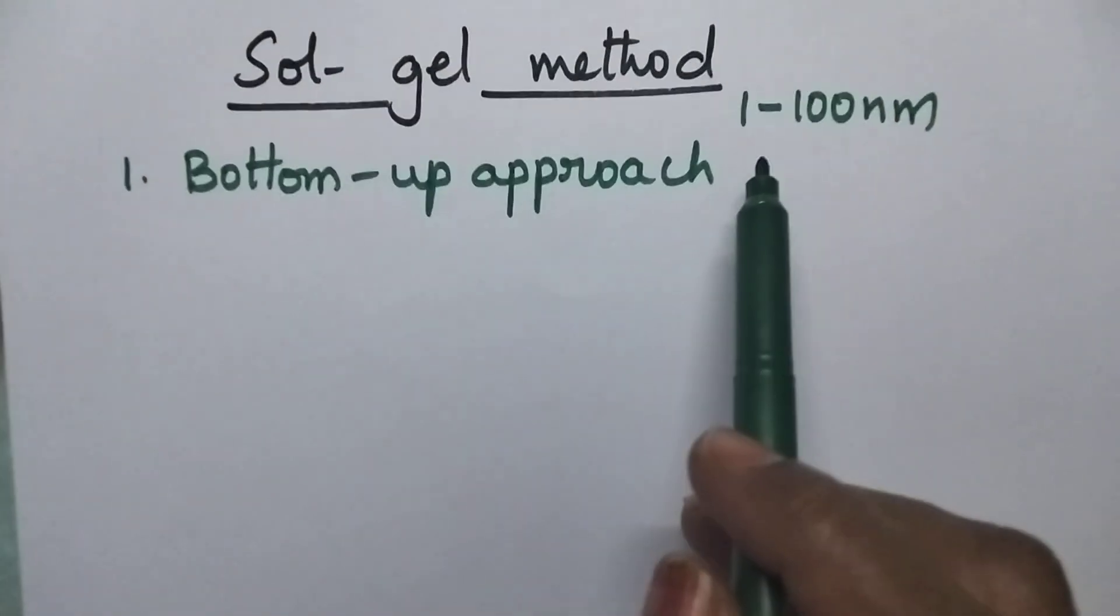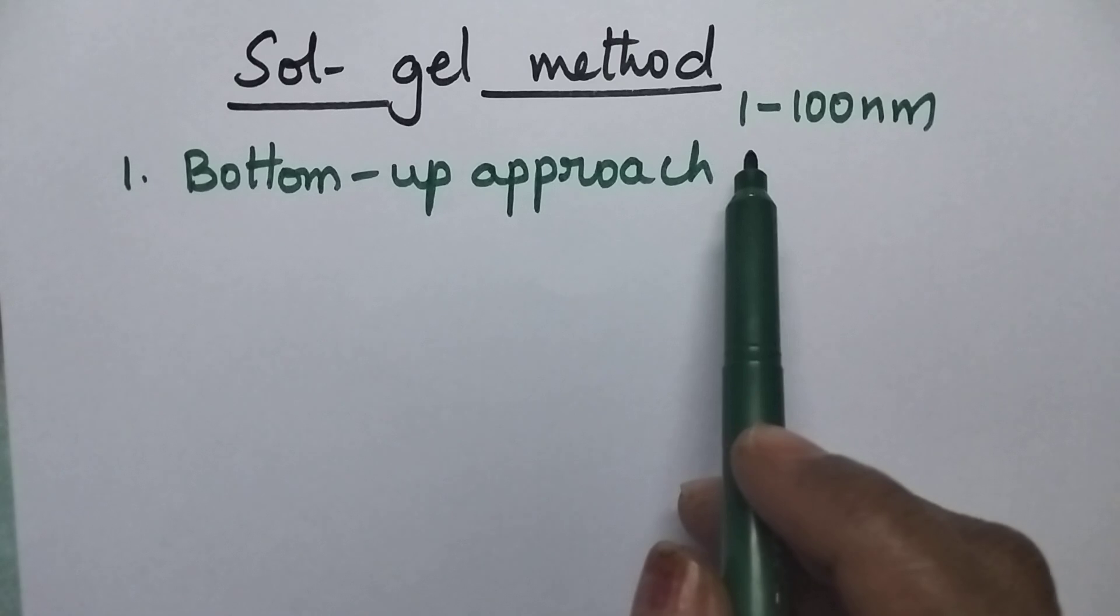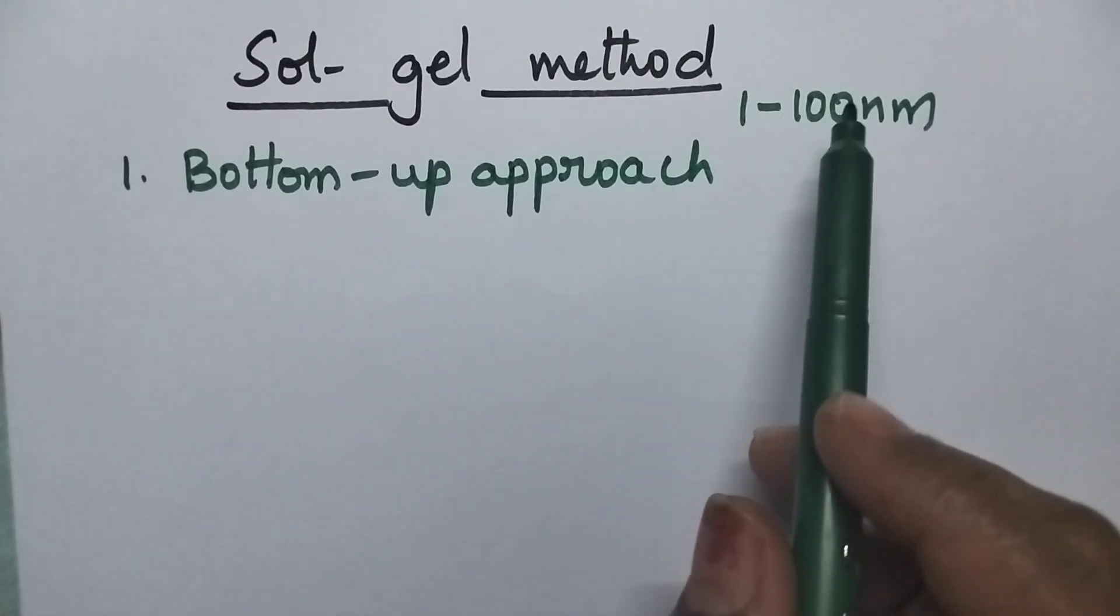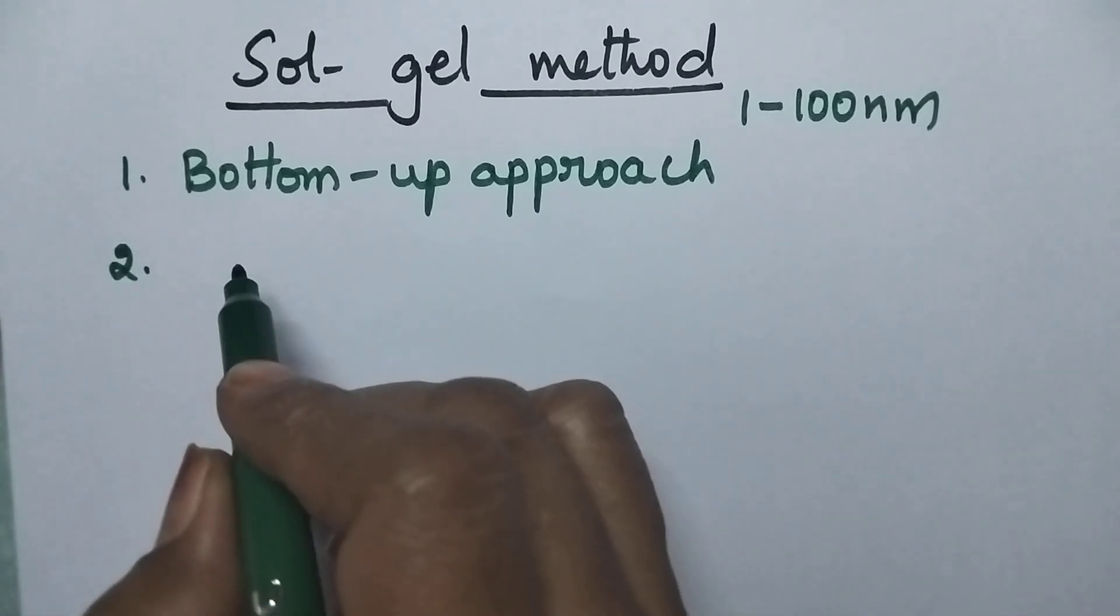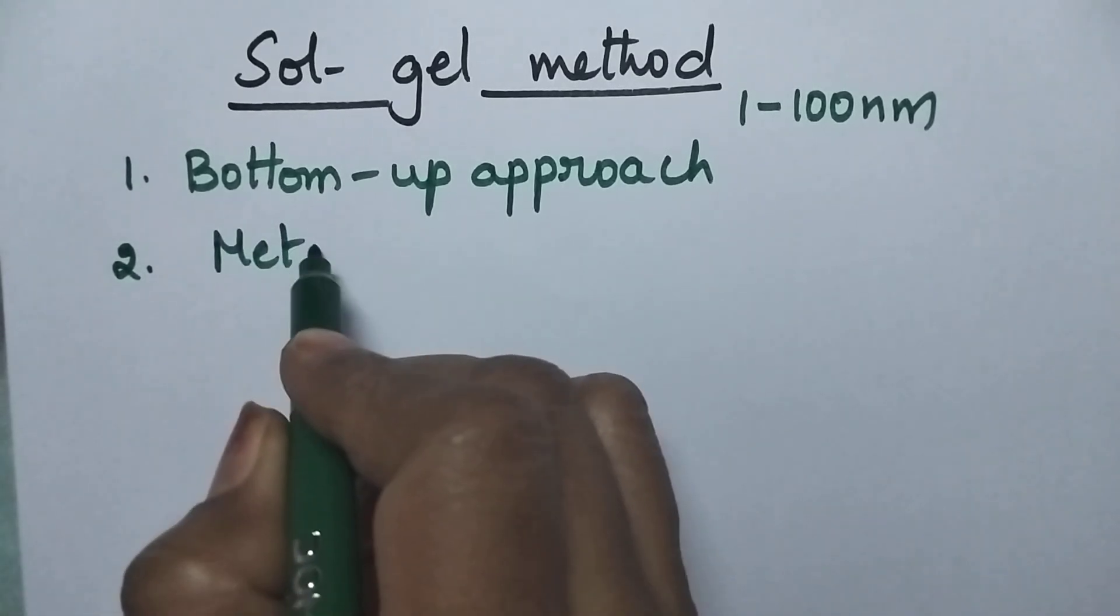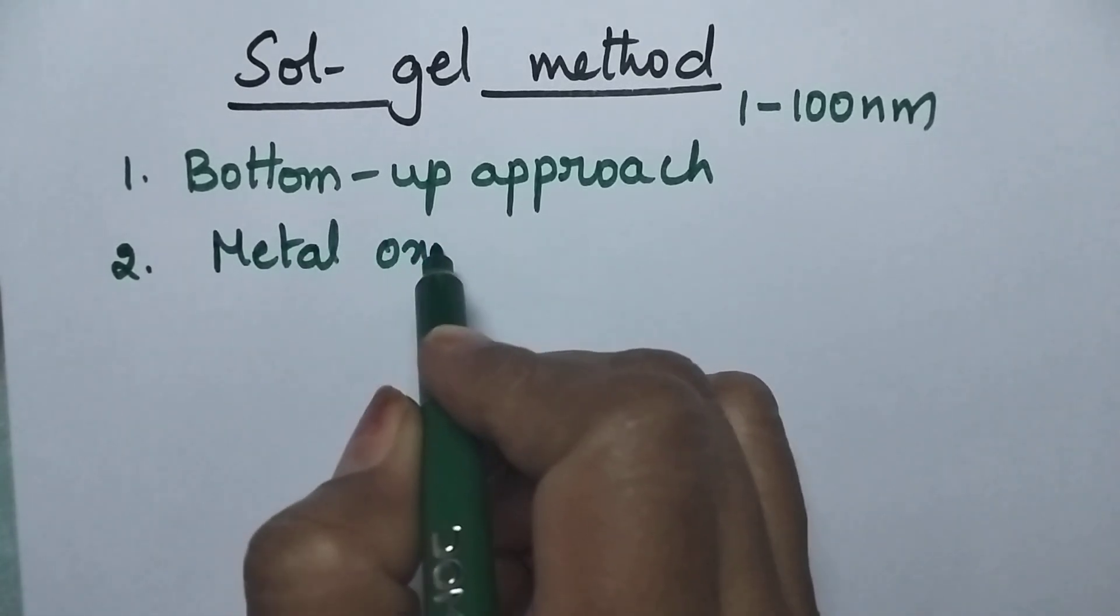Nanomaterials means the materials having the dimension in the range of 1 to 100 nanometers. Especially this Sol-Gel method is highly useful for the preparation of metal oxide nanomaterials.